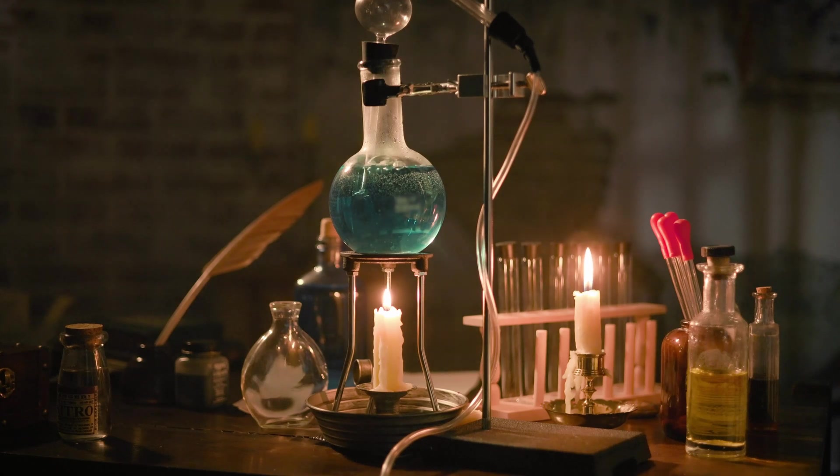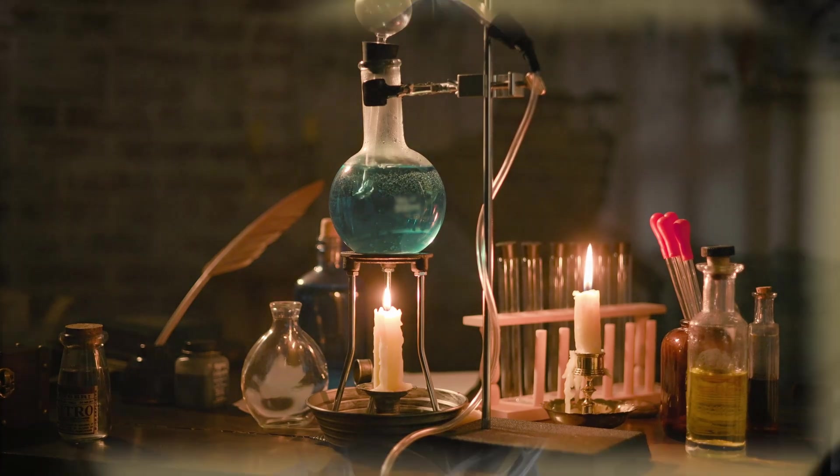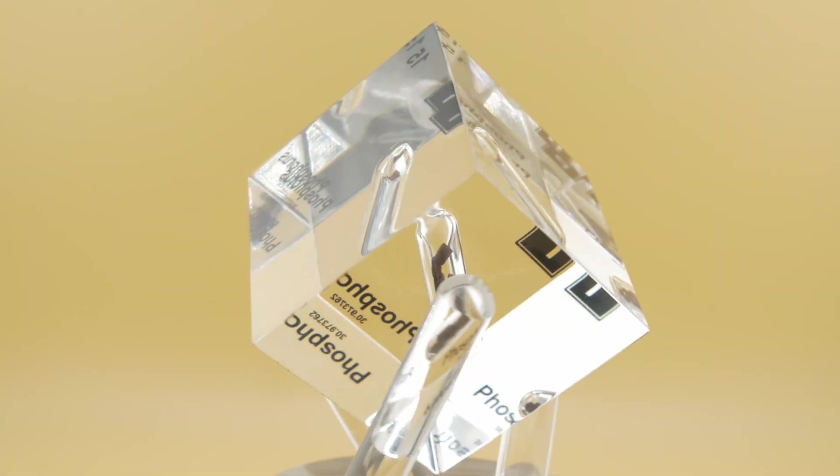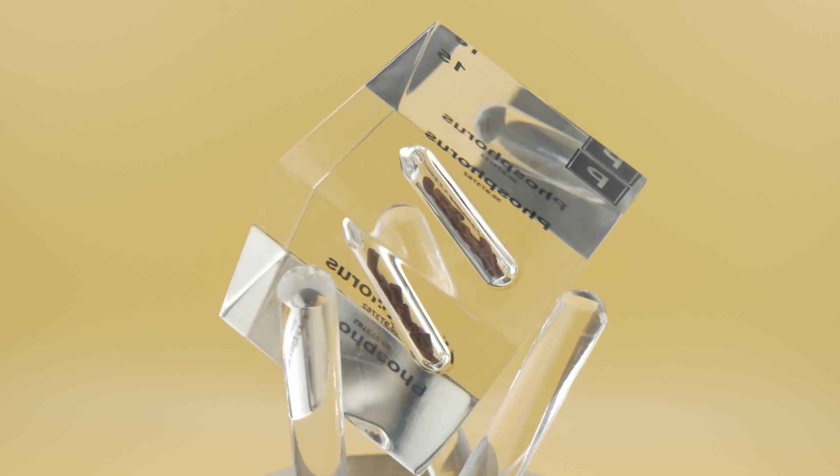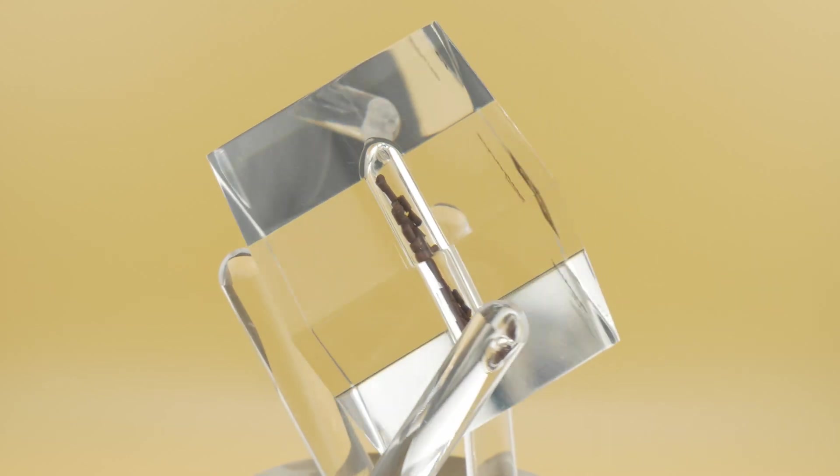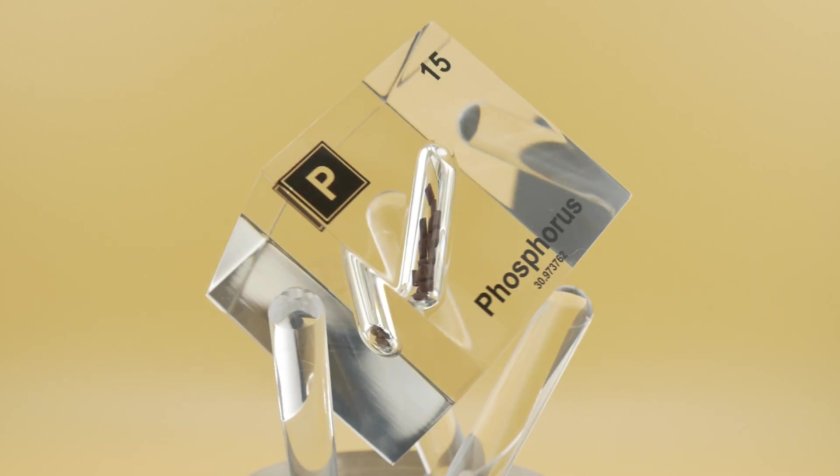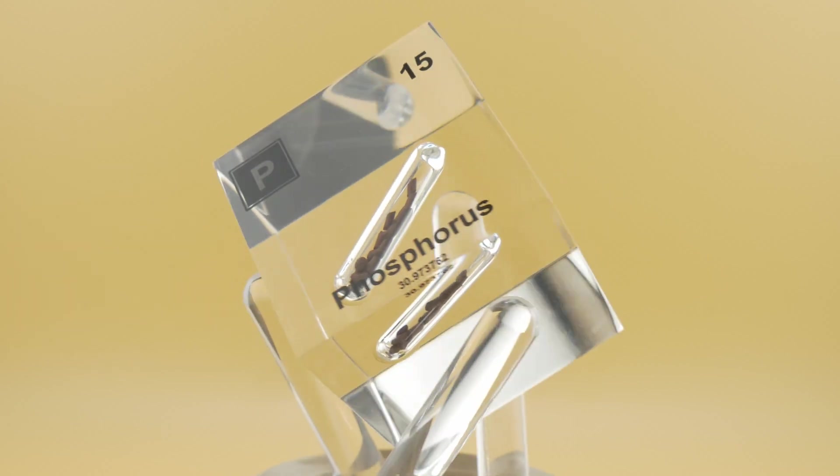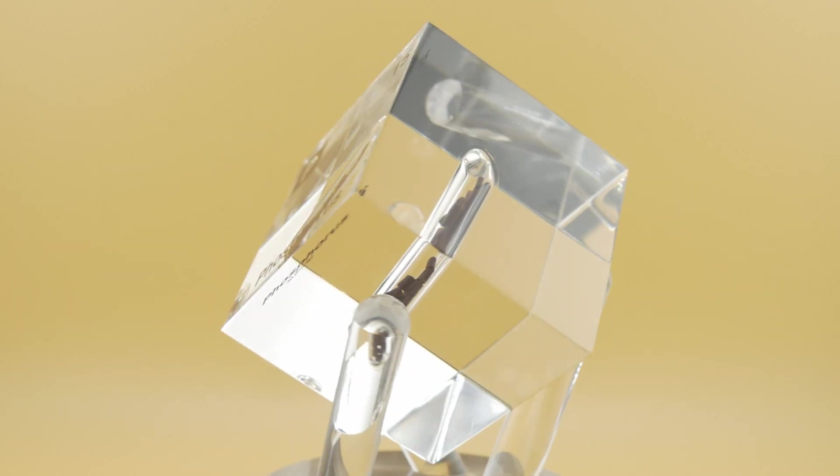Brandt believed that human urine contained vital elements that could lead to the creation of gold. He collected large quantities of urine reportedly from soldiers. Brandt then wanted to concentrate this substance and the urine was allowed to stand until it began to decompose. He boiled it down to reduce it to a thick syrup.